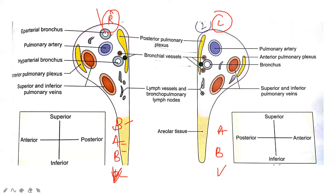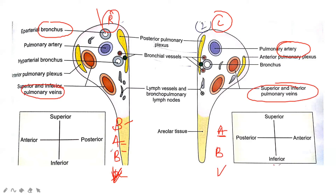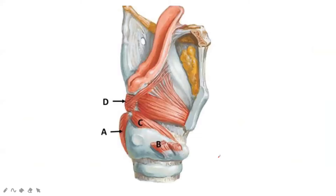So the right hilum: the uppermost relation is bronchus. On the left side, the superior-most is the artery. The lower-most is the vein on both sides. Remember: Bichare Atal Bihari Vajpayee for the right, and Atal Bihari Vajpayee for the left.